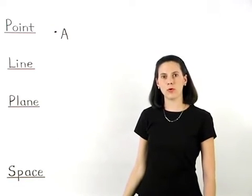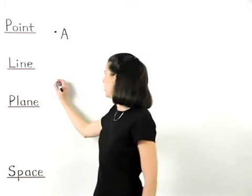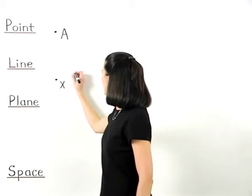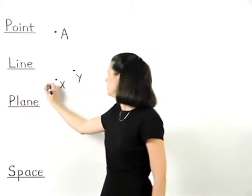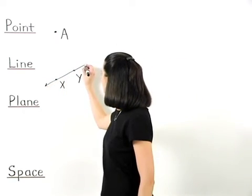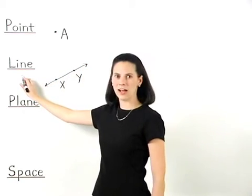If we have two points, such as points X and Y, we can introduce our next figure in geometry, which is called a line.